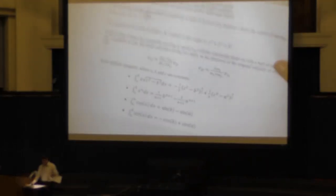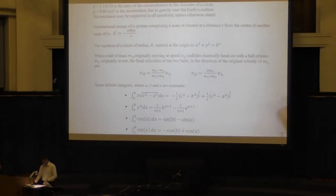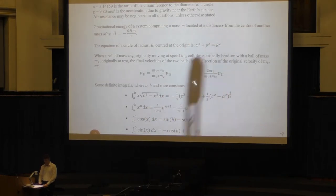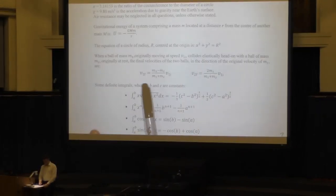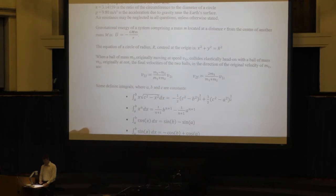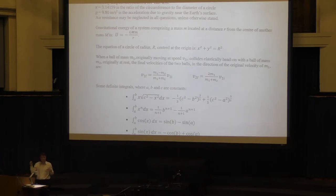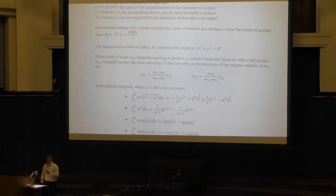In the possibly helpful information section, I have things like pi, g, and a note that air resistance may be neglected. There are also a couple of equations: the gravitational potential energy equation for two masses separated by distance r, elastic collision equations giving final speeds, and a small integral table.